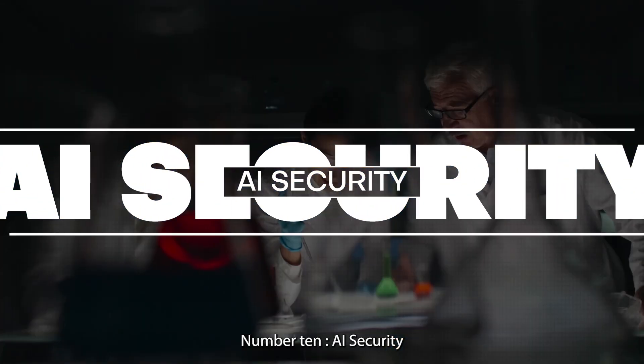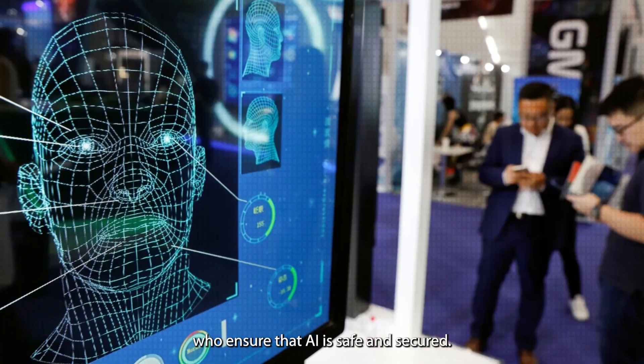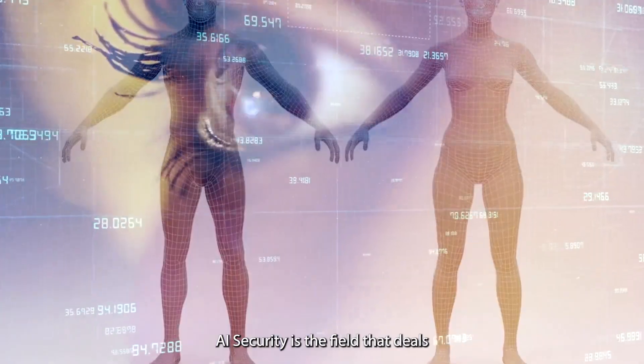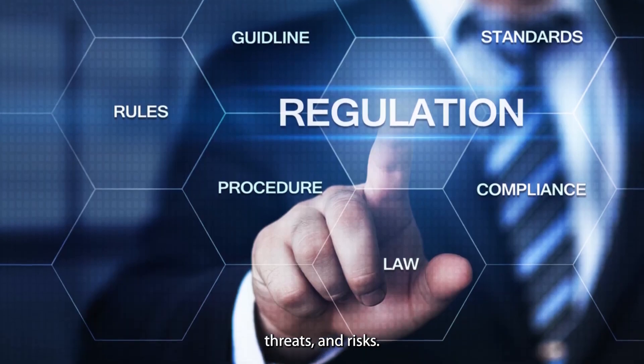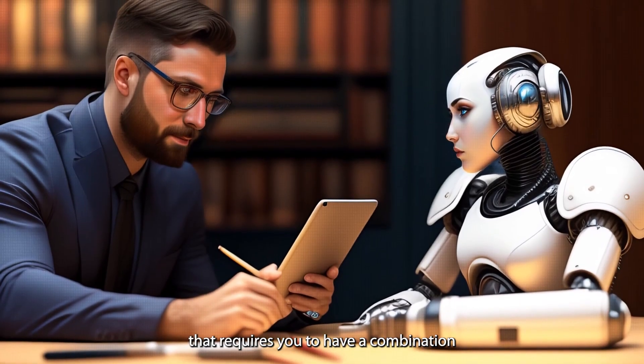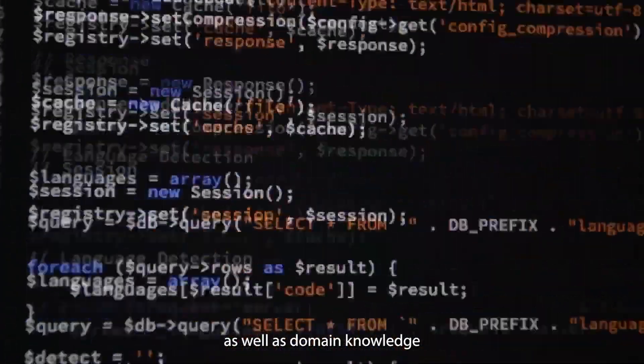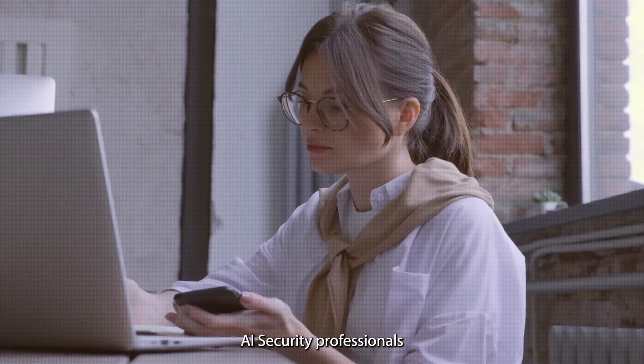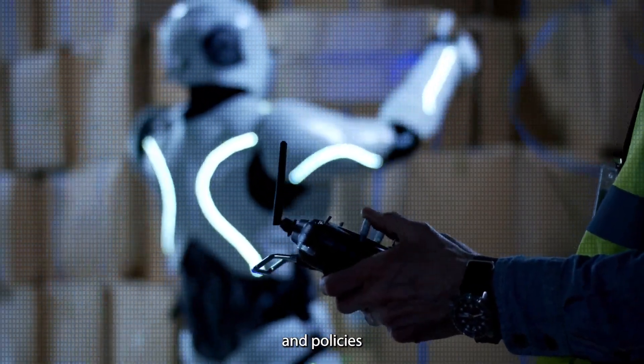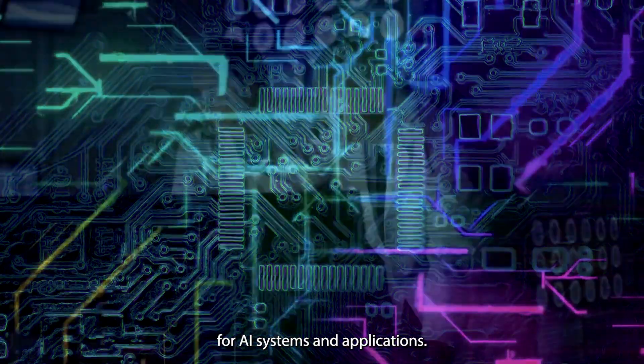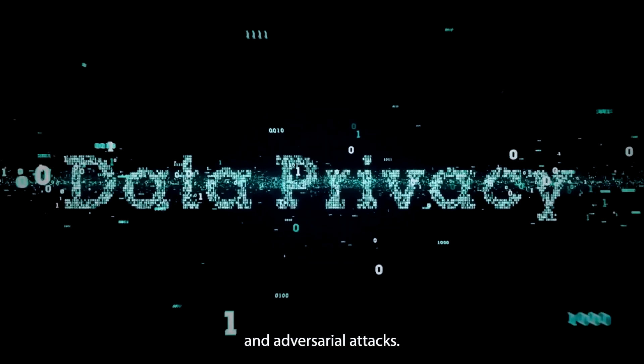Number 10. AI Security. And this list will not be complete without those who ensure that AI is safe and secure. AI security is the field that deals with the protection of artificial intelligence systems and applications from malicious attacks, threats, and risks. This is a field that requires you to have a combination of technical, analytical, and ethical skills, as well as domain knowledge and curiosity. AI security professionals need to design, implement, and evaluate security measures and policies for AI systems and applications. They also need to deal with issues such as privacy, trust, accountability, and adversarial attacks.